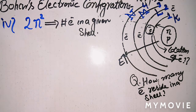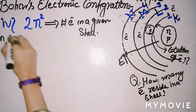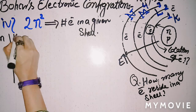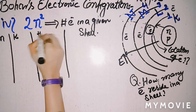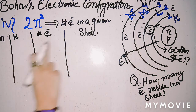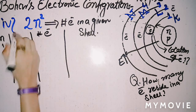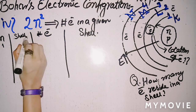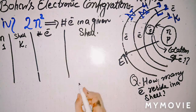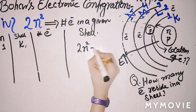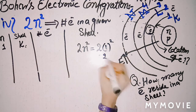We can create a table. If you have a value of n and the shell name, the number of electrons equals 2n². For n=1, the shell is K, and the number of electrons is 2 multiplied by 1² = 2. So the K-shell contains a maximum of 2 electrons.